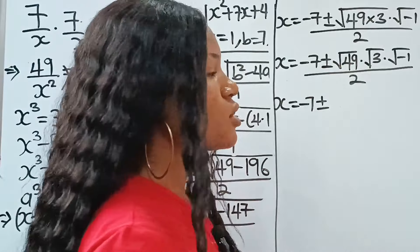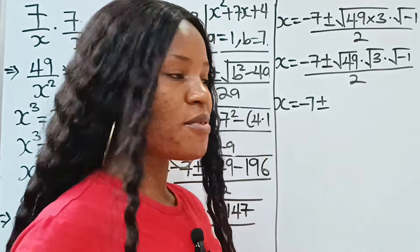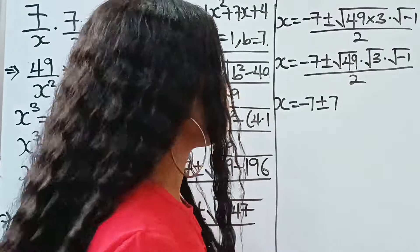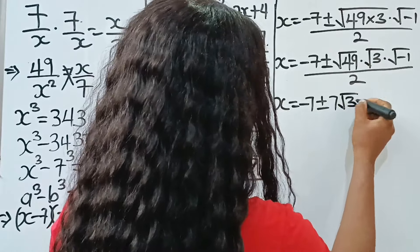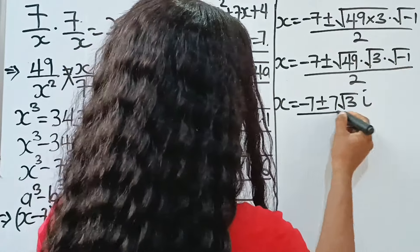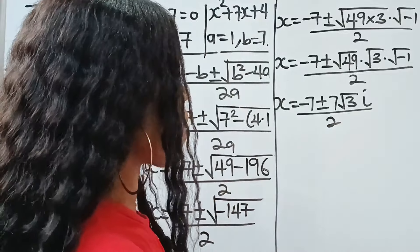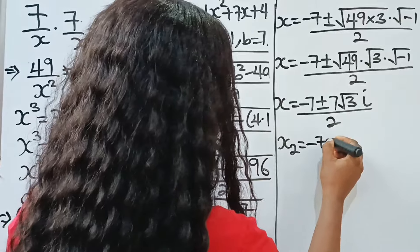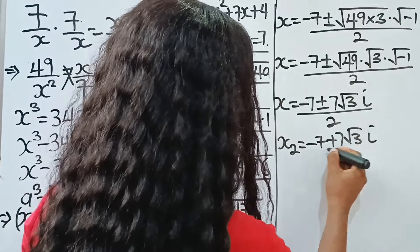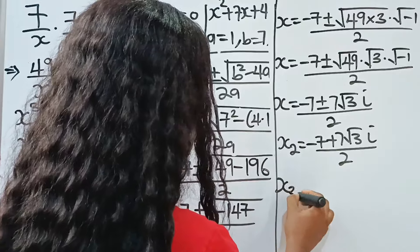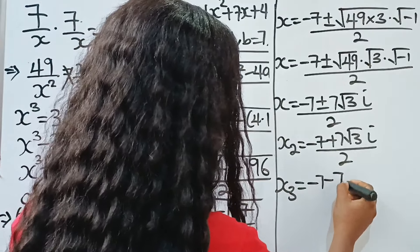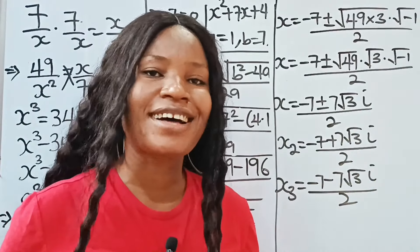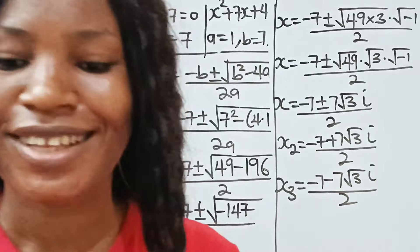So our x equals negative 7 plus or minus 7√3·i divided by 2, since the square root of 49 is 7 and the square root of negative 1 is i. Therefore, x₂ equals (negative 7 plus 7√3·i) divided by 2, and x₃ equals (negative 7 minus 7√3·i) divided by 2. Thank you so much for watching and have a beautiful day!